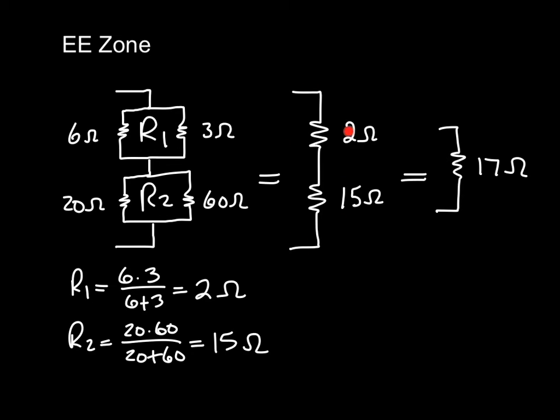So we rewrite the circuit this way. And now it's clear that that's a series and we just have to add those two together to give us a total of 17 ohms.